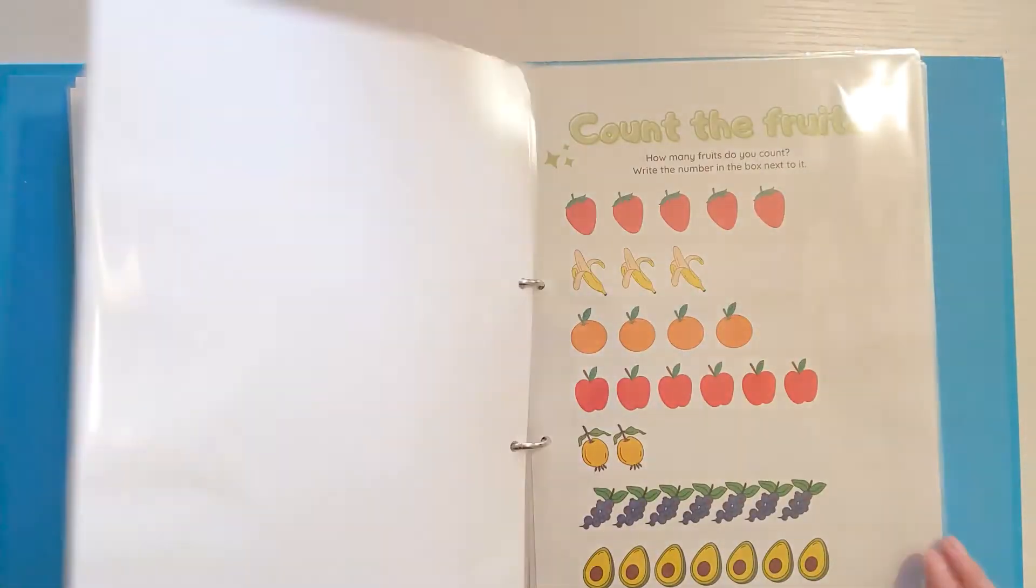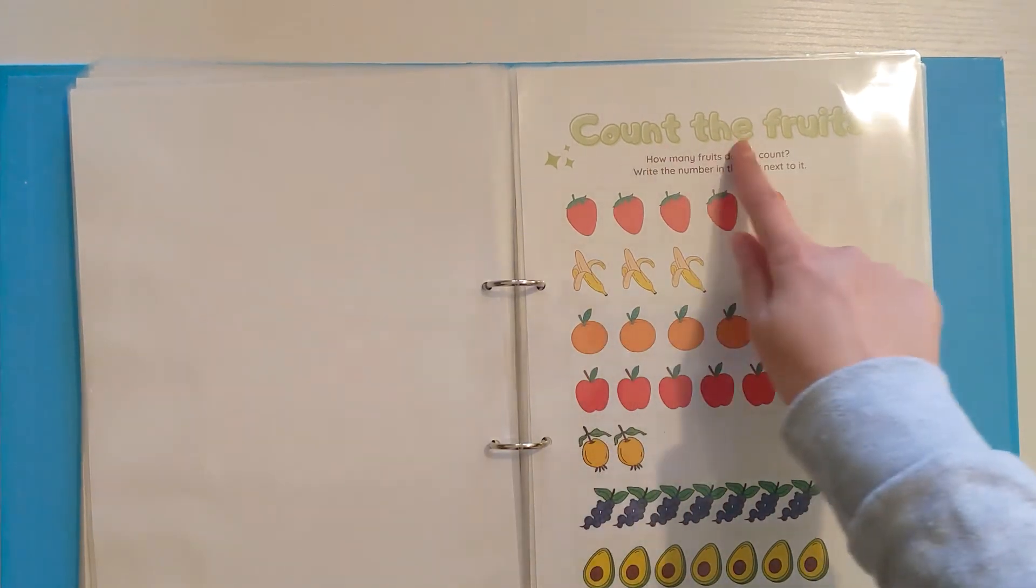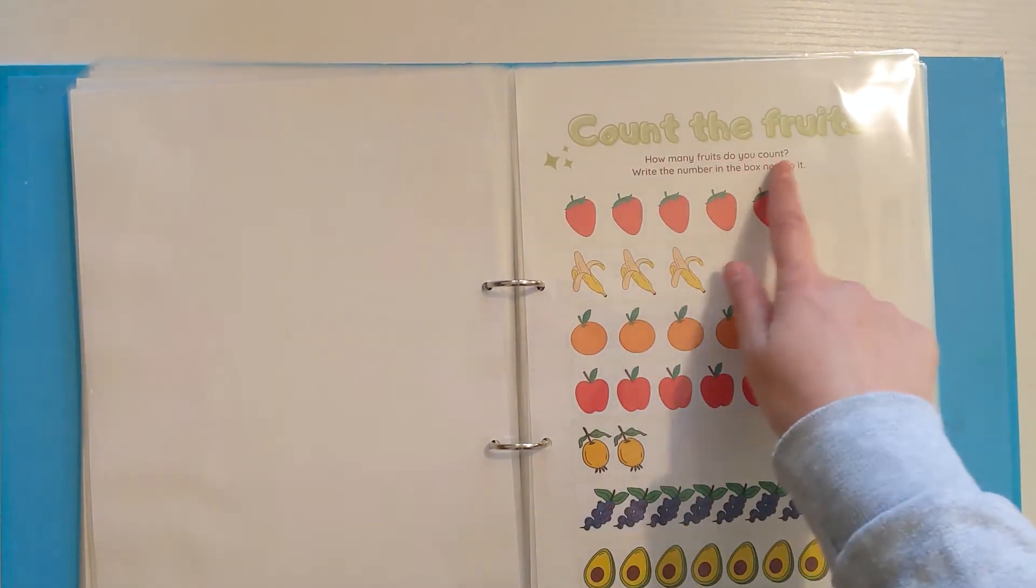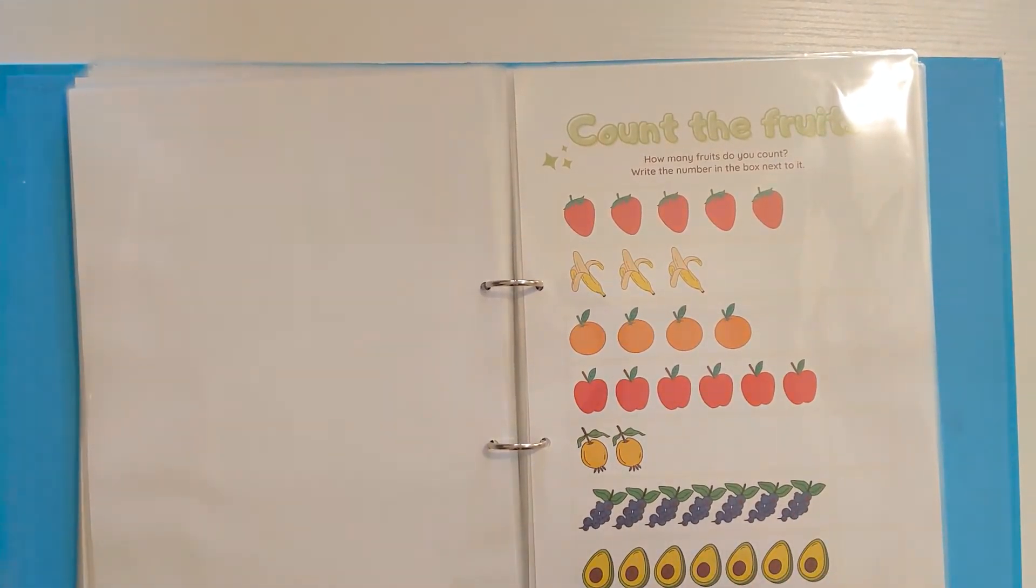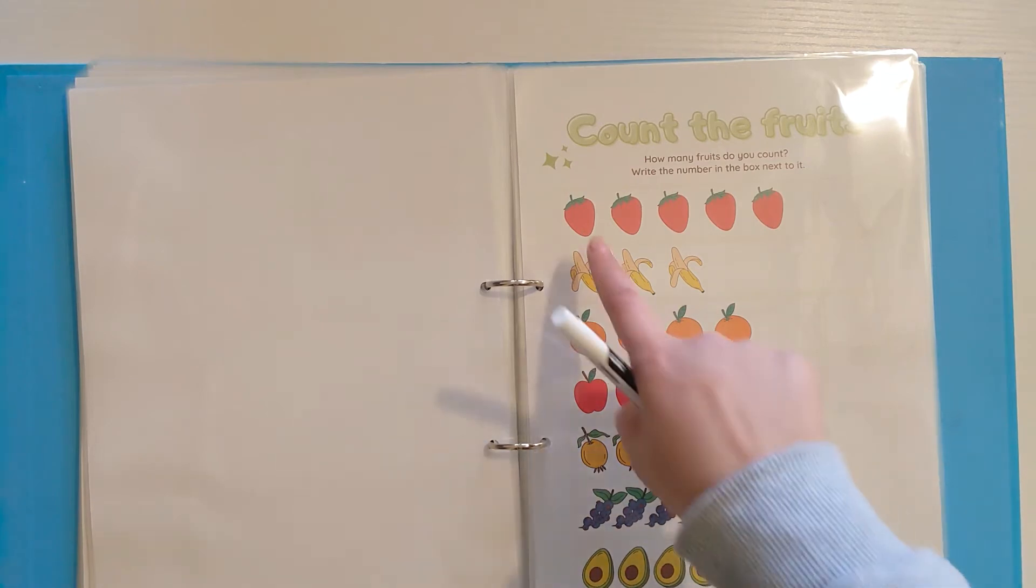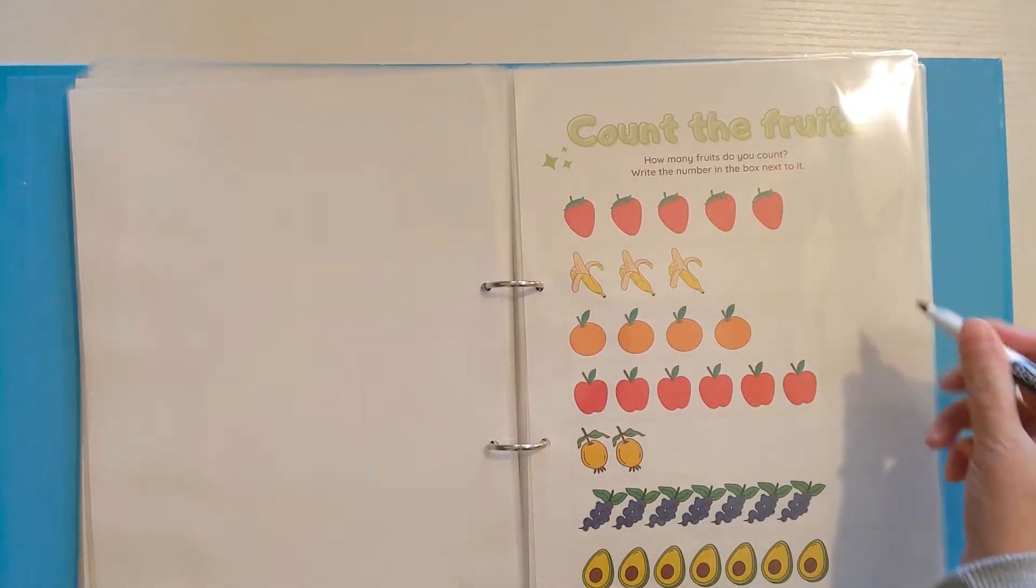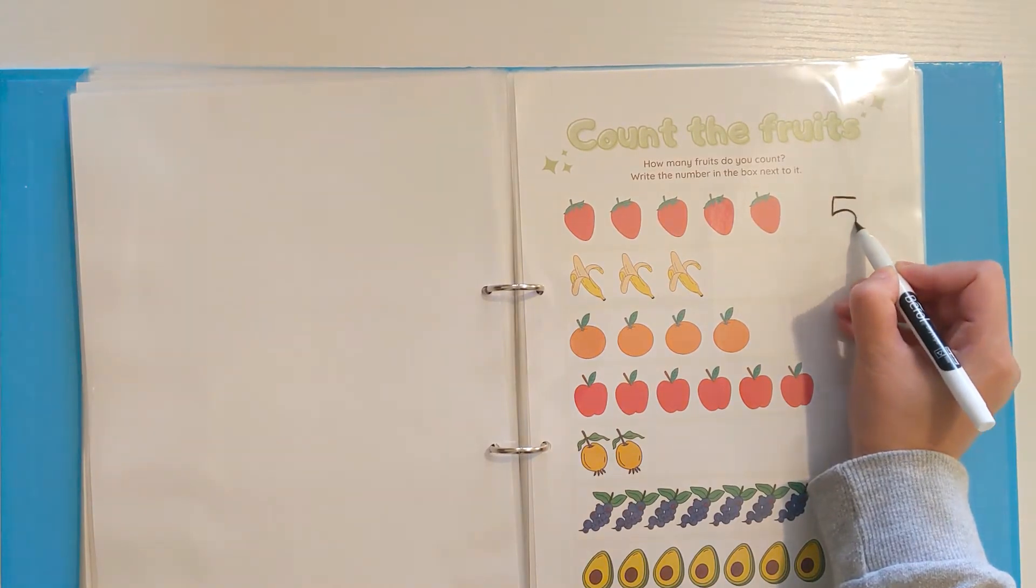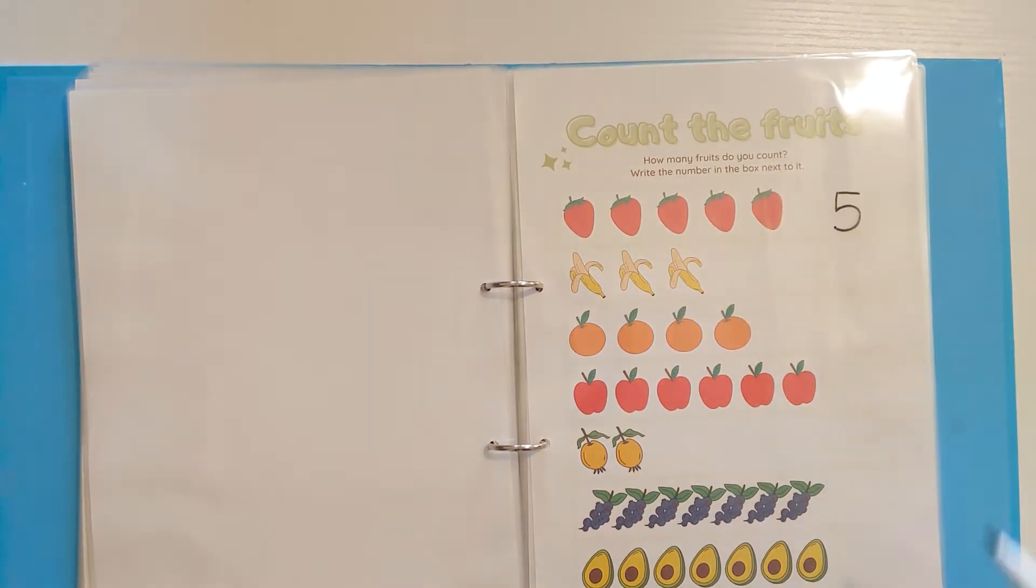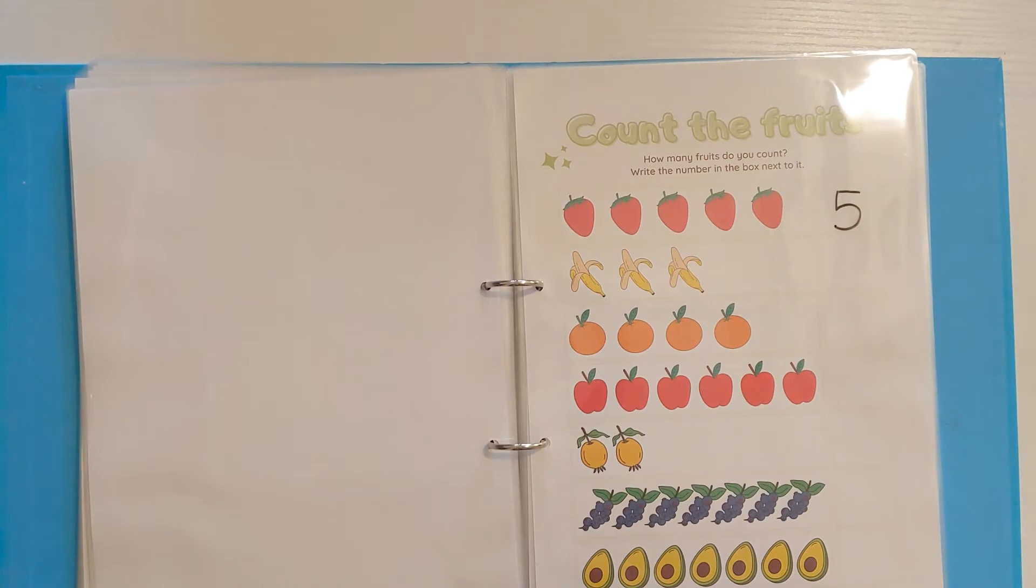Once they've completed that activity, we've got count the fruit. How many fruits do you count? Write the number in the box next to it. Again teaching the child that the number has to correspond with the same number of objects. They would just count one, two, three, four, five. They might need your support for this. You might even want to dot the correct number formation in the box if they're quite young or don't fully understand the concept. It's a really fun activity to work through to teach them numbers.